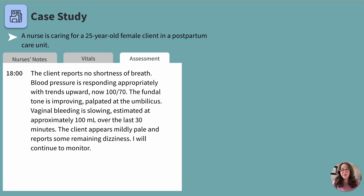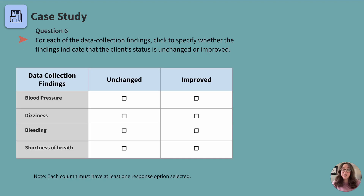Let's move on to question six. For each data collection finding, click to specify whether the finding indicates the client's status is unchanged or improved. Go ahead and pause the video, make your selections, and we'll review afterward. Blood pressure is now 100 over 70, previously 88 over 60 — that has improved.